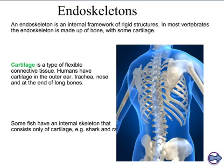Endoskeletons, that internal framework such as ours, provide a rigid structure. In most vertebrates the endoskeleton is made up of bone, although we do have some cartilage — on the tip of your nose, outer ears, and at the ends of your long bones. That's where growth actually takes place. Some fish have an internal skeleton consisting only of cartilage, some of bone and cartilage, and some just bone.